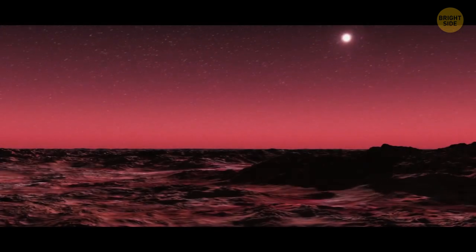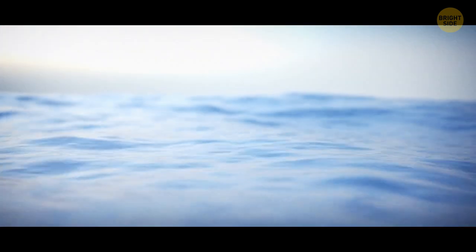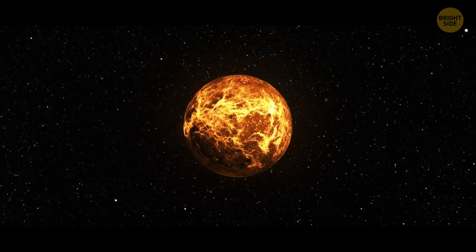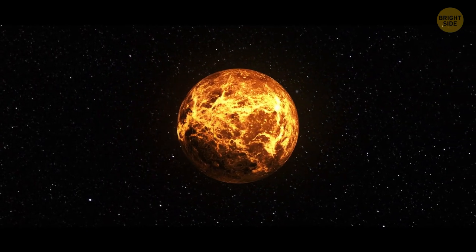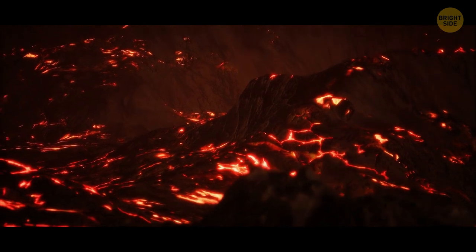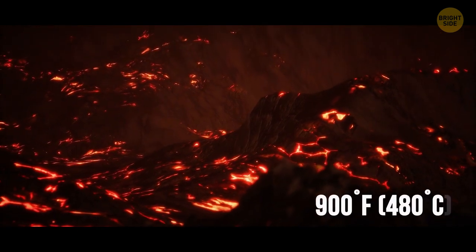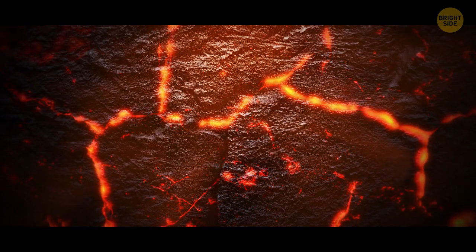Venus' surface is extremely dry. There's no liquid water on the planet. And the pressure there is 90 times greater than that on Earth's surface. The temperatures often rise higher than 900 degrees Fahrenheit. That's hot enough to melt some metals.